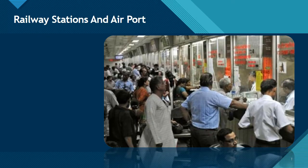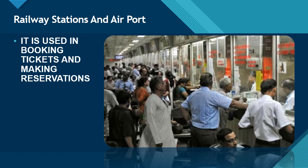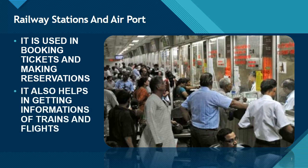Now let us learn about railway station and airport. In the railway station and airport, computers are used in booking tickets and making reservations. Suppose if I have to go from one place to another, we need to book a ticket. That is why at the station, we can easily book tickets and make reservations. It also helps in getting information about flights and trains.